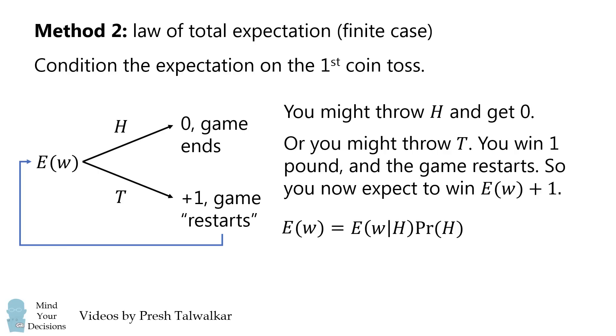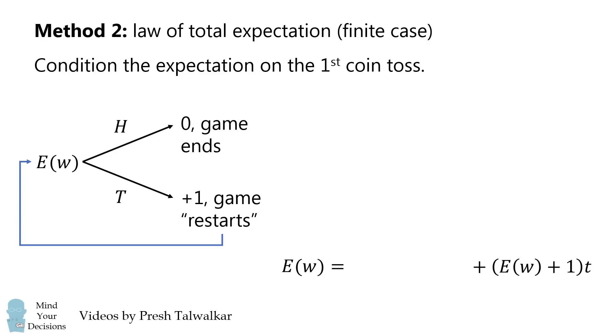So we'll write this in a simple algebra equation. We first use the formula for the law of total expectation, and then we substitute what we just calculated. We then simplify this equation, and now we have a linear equation in E(W).